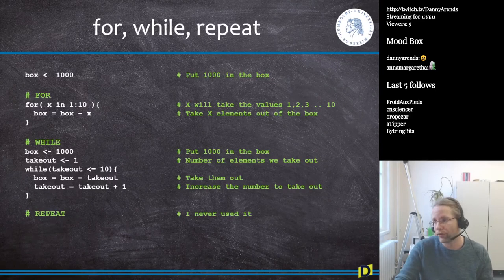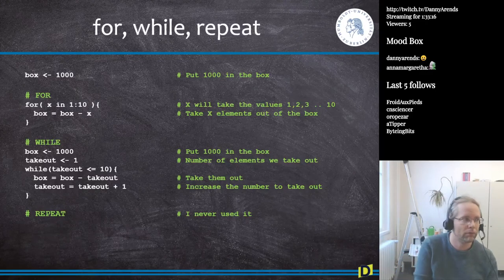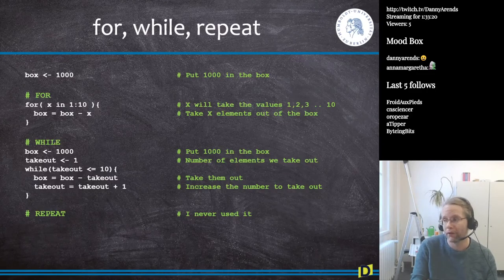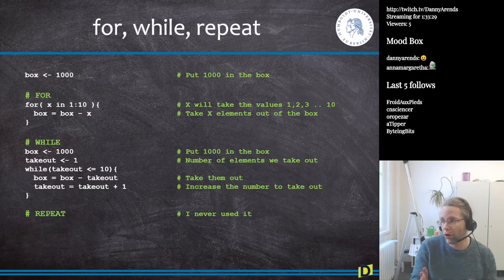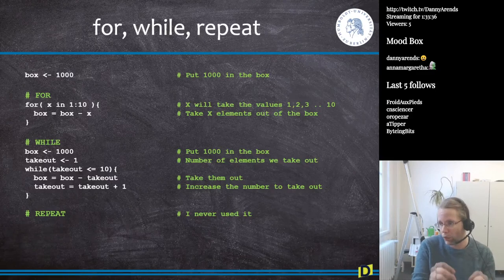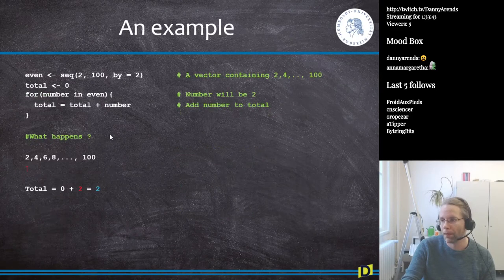Generally you always use for loops. While loops are relatively advanced because most of the time you know how many columns or rows your matrix has. For example, to make box plots: for each row in the matrix, make a box plot.